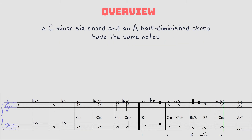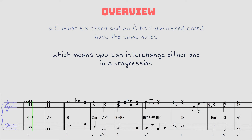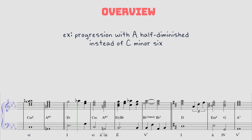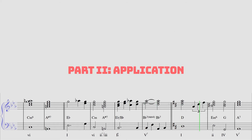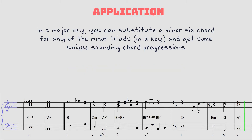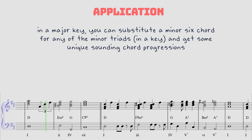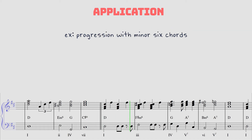A C minor 6 chord and an A half diminished chord have the same notes, which means you can interchange either one in a progression. In a major key, you can substitute a minor 6 chord for any of the minor triads and get some unique sounding chord progressions.